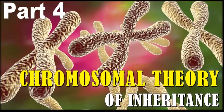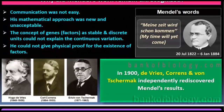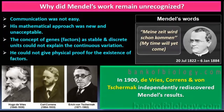Our next topic is the Chromosomal Theory of Inheritance. Genes are present on chromosomes. After the discovery of chromosomes came the concept of genes. Before that, Mendel only knew about factors. We will talk about Hugo De Vries, Karl Correns, and Von Tschermak.